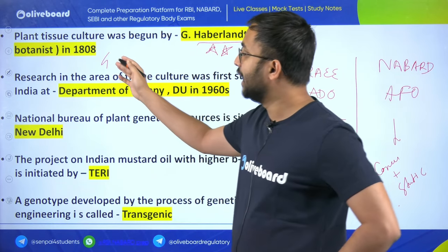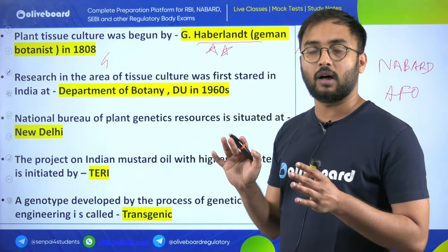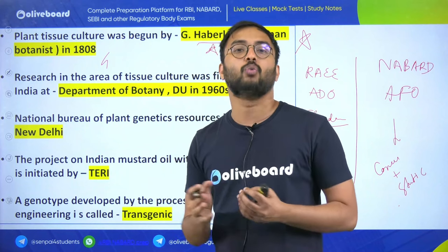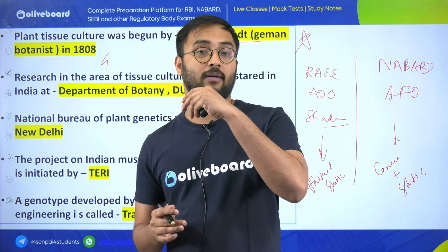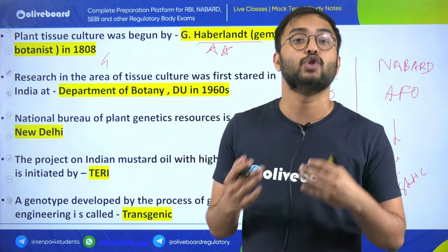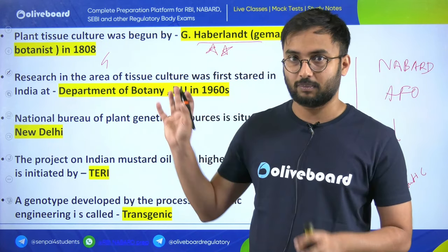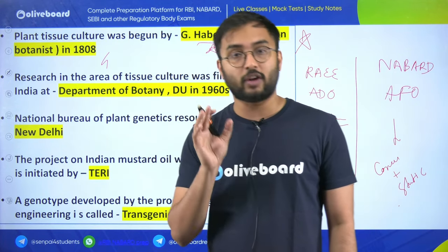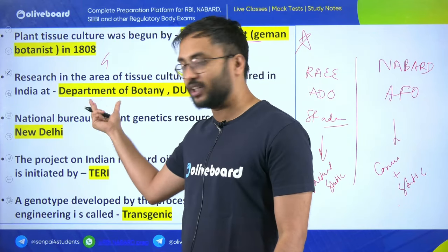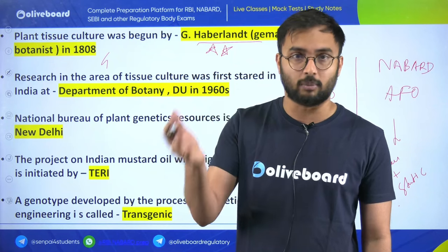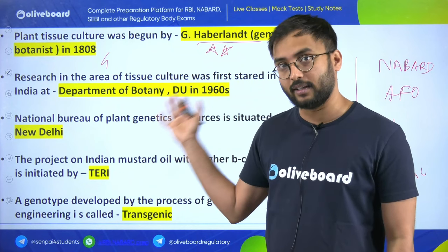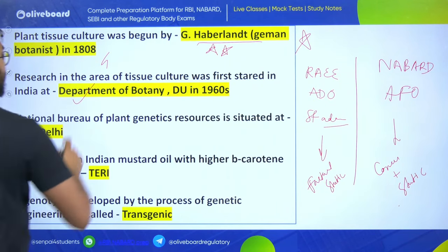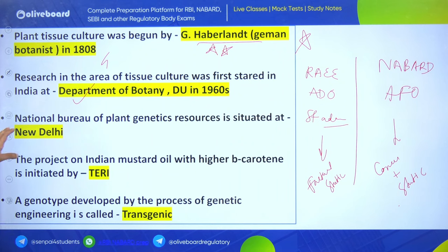We have gone through almost four to five slides covering one-liners related to tissue culture, plant genetics, plant morphology, and physiology - touching most important topics. You have to go through the video, research those words, because we have to cover 500 one-liners. Research in tissue culture in India was first started by the Department of Biotechnology, Delhi University, in the 1960s.